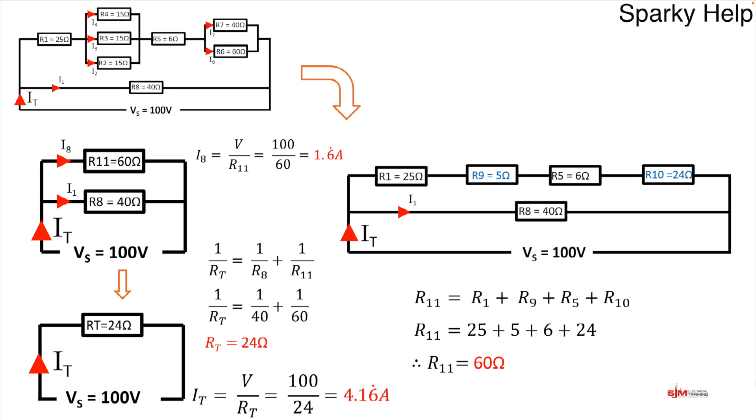Let's have a look at the current that flows in the top branch, in I8. So this would be all of the top line. So to do that it's Ohm's law. Because in parallel voltage stays the same. So I'm looking at the two in parallel. It is voltage which is 100 divided by R11 which is 60, gives us 1.6. So out of IT, 4.16 goes in, of which 1.6 recurring goes through the top branch. So the rest must go through R8.